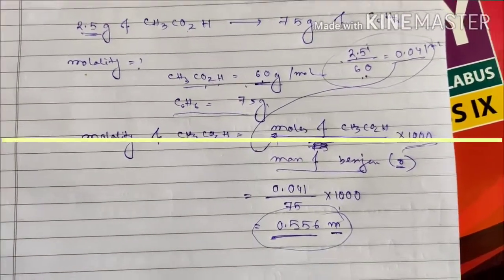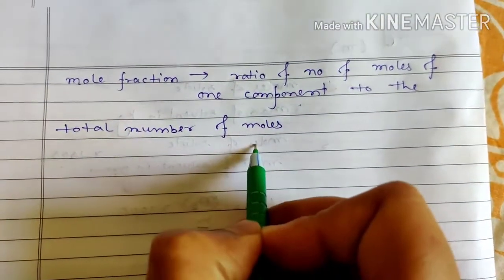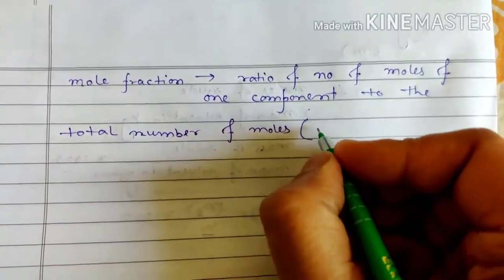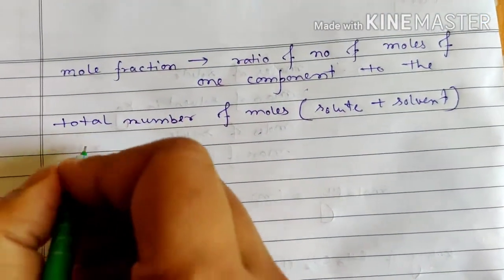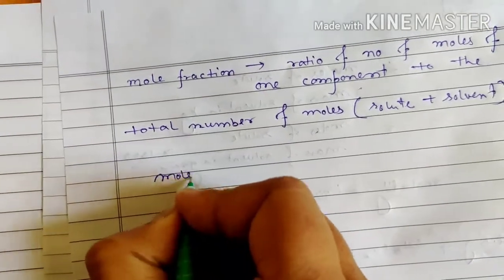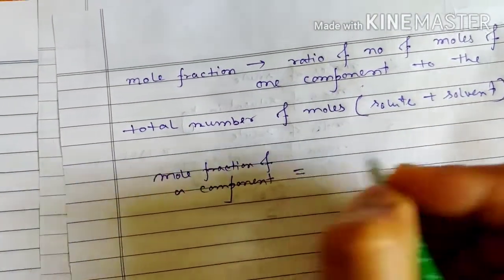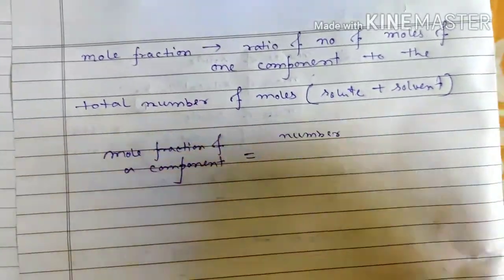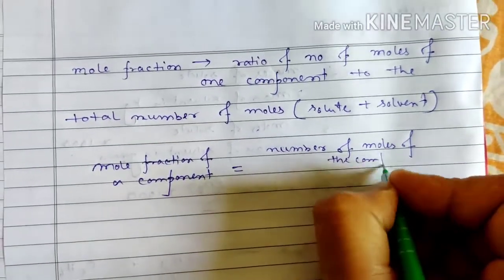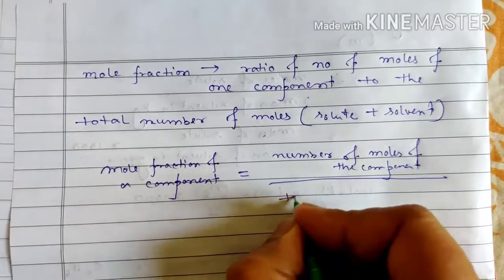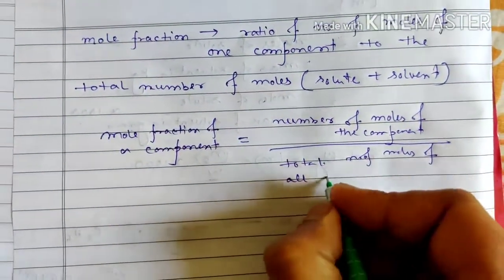Now let us look at mole fraction. The definition is already written: it is the ratio of the number of moles of one component to the total number of moles present in the solution. The total number of moles includes both solute and solvent. The mole fraction of a component equals the number of moles of that component divided by the total number of moles of all components.